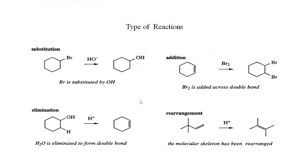In a substitution reaction, one particular group is substituted by another group. For example, here the bromide ion is substituted with an OH group — the bromide is displaced by OH. When one group displaces another group in a compound, that type of reaction is called a substitution reaction.